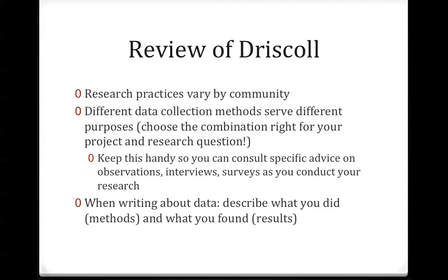When we write about primary research that we've conducted, our audience expects us to describe what we did to get that information — the methods and tools we used — and of course what it is that we found, which is the results. You're pretty used to writing about results already because that's what you do with secondary research. In primary research, we have to be really explicit about how we're conducting our research so that people know how we got our data, because that helps our audience interpret what our results truly mean.